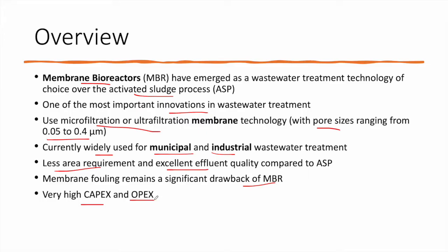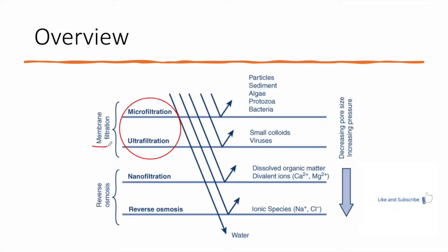In membrane filtration, we have micro-filtration and ultra-filtration — these two are involved in the MBR sheets or MBR membranes. Using these two filtration techniques, we can highly reduce colloidal particles, sediments, algae, protozoa, and bacteria, effectively disinfecting the wastewater. We can remove very small colloids and viruses, which is impossible using any traditional technique. These are usually removed in tertiary treatment. The MBR membrane can highly reduce colloidal particles as well as pathogens, achieving a very high quality effluent.